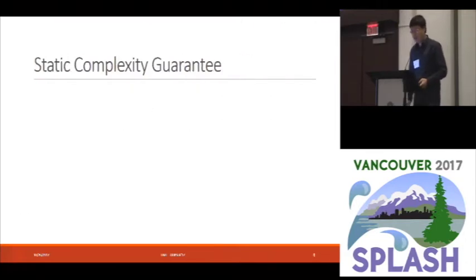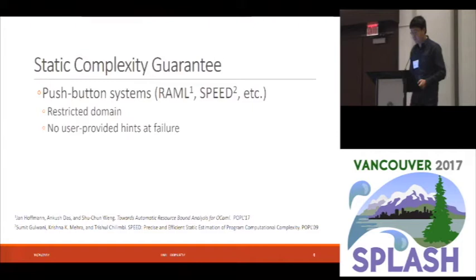The static analysis and guarantee of time complexity has actually been active in the research field for many years. The existing work largely falls into two camps. The first camp tries to build a push-button systems where the programmer just need to write normal programs, and the system can fully automatically come up with the estimates of the total running time of your program. So that sounds good. But the problem with this approach is that they usually only work in restricted domains, or they only support certain categories of complexes like linear or polynomial complexes. And when the analysis fails, those systems usually do not allow the user to provide the hints to help the analysis.